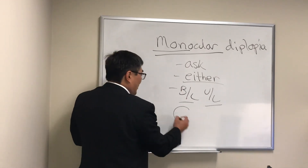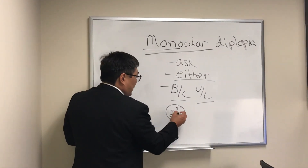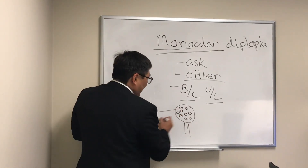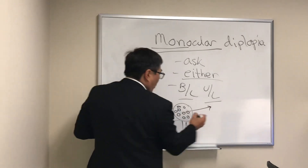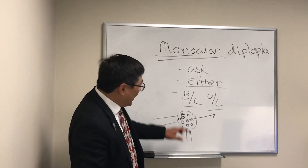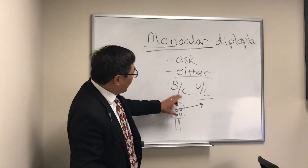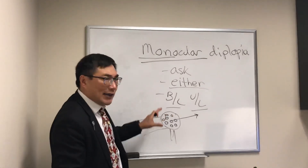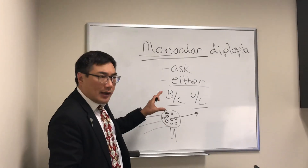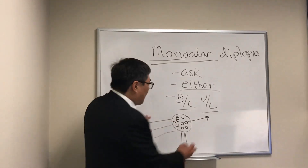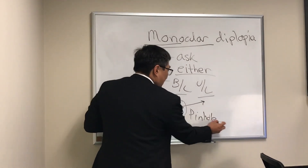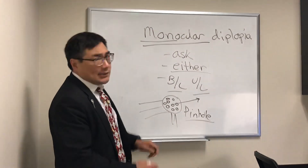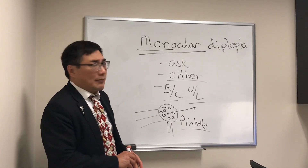When we have monocular diplopia, one of the first things we should do is deploy the pinhole test. With the pinhole, only one ray of light is allowed through, blocking the extra rays. This lets us prove that the optical system is what's causing the monocular diplopia — whether it's dry eye, cataract, something in the cornea, or in the retina. The pinhole is a fast and effective way to confirm an optical cause.